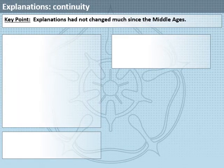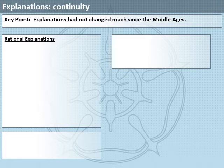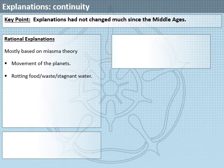Let's look at explanations of the plague. Our key point is that these explanations had not changed much since the Middle Ages. Firstly, around the rational explanations - these were mostly based on miasma theory, the idea that bad air caused disease.